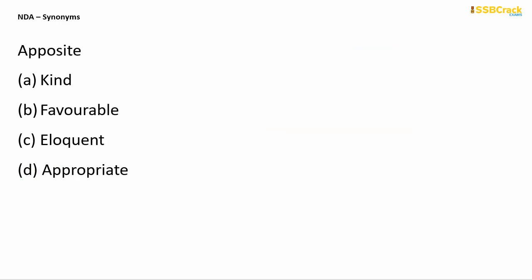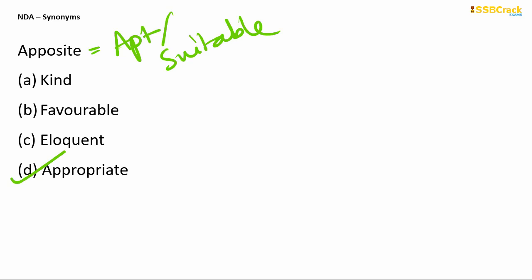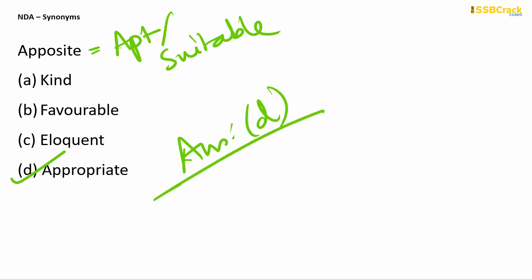The next word is apposite. Apposite doesn't mean opposite, though it may look like that. Apposite means something which is apt, suitable — in other words, appropriate. So 'appropriate' is synonymous with apposite, and your answer is option D.